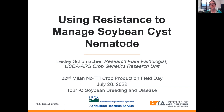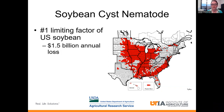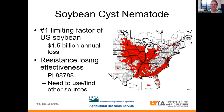The current distribution for soybean cyst nematode is all of these areas shown in red, and it continues to spread every year. Currently, it is considered the number one limiting factor of U.S. soybean production and causes around $1.5 billion in annual loss.